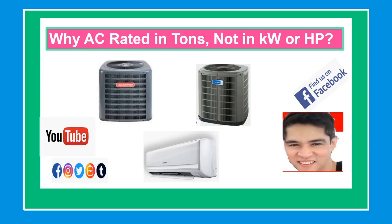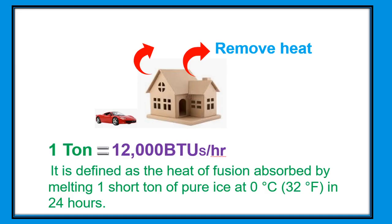Our topic for today: why is AC rated in tons, not in kilowatts or horsepower? Air conditioning provides cooling to a home by removing heat from the air. This heat is measured in BTU, or British Thermal Unit, a measurement of thermal energy. It was first used in the late 1800s and has since become one of the most common units of classification in heating and cooling appliances.